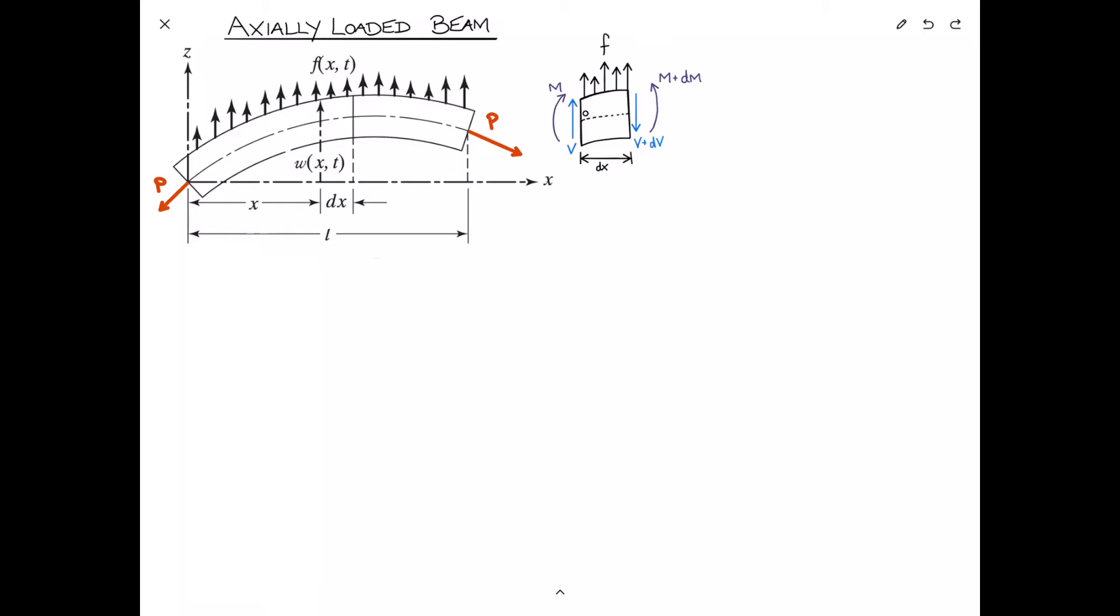This little element has a shear on each side, V and V plus dV, a moment on each side, opposing moments M and M plus dM, and in general there's some distributed load F, which is a load per unit length acting across the element. The length of the element is dx, and this dotted line represents the elastic axis of the beam. In addition to the Euler-Bernoulli beam model, we need to add the model for the string under tension, which has a force P on one side and P plus dP on the other, where P is defined as a tensile load.